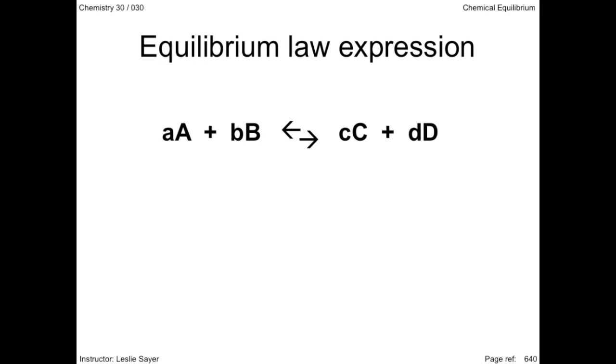From this, we can reveal a generalized expression for any chemical equation. If big A, big B, big C, and big D are the concentrations of reactants and products after a reaction has reached equilibrium, and small a, small b, small c, and small d are the stoichiometric coefficients from the balanced chemical equation,